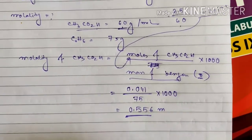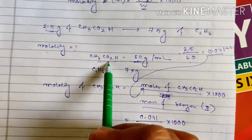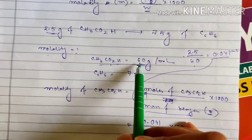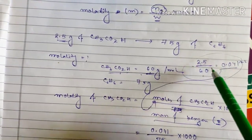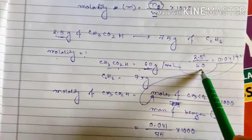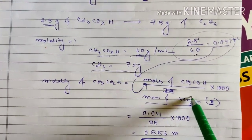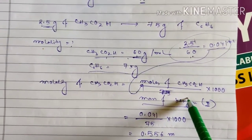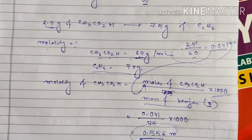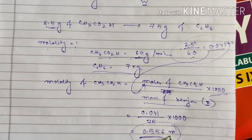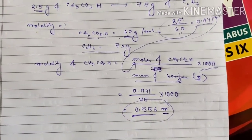So the answer is 0.556 molal. To summarize the process: find the amount of solute given, calculate its number of moles using given mass divided by molar mass, then divide by the mass of the solvent in kg — or in grams multiplied by 1000. The result is the molality, always expressed in small m.